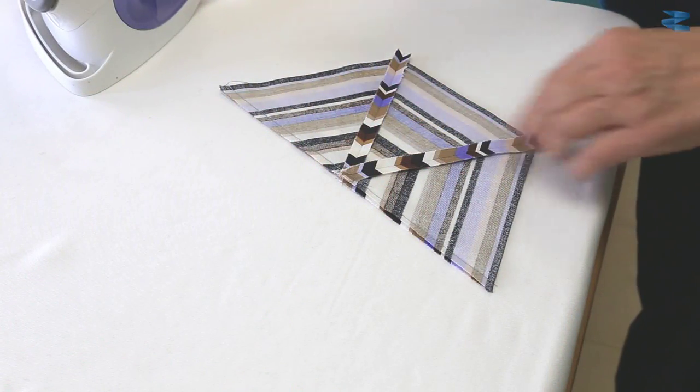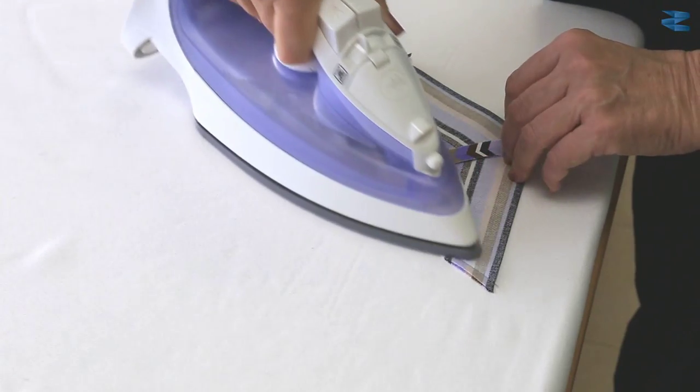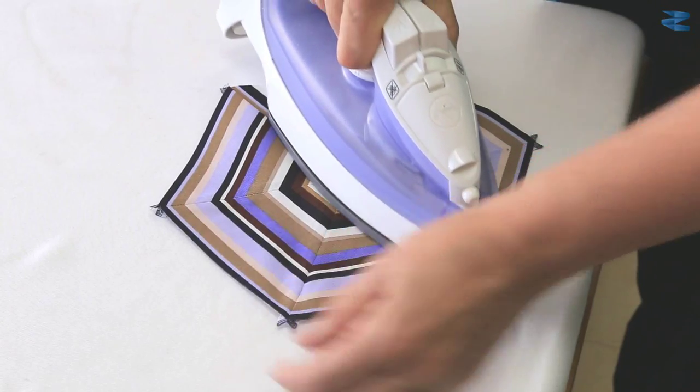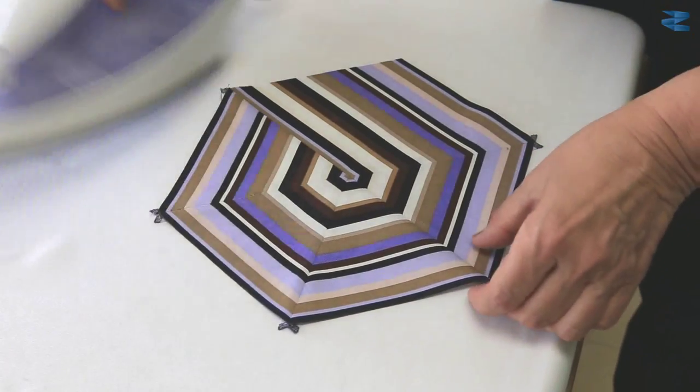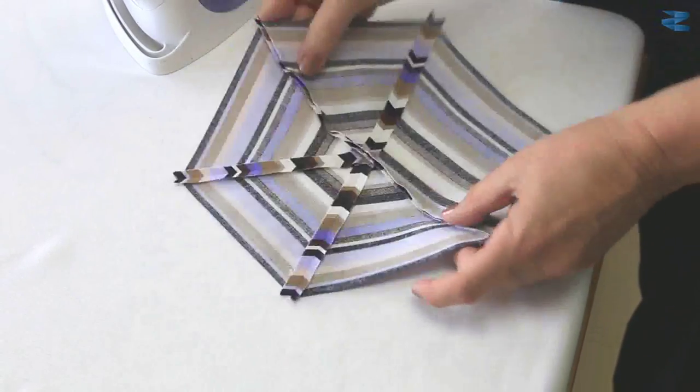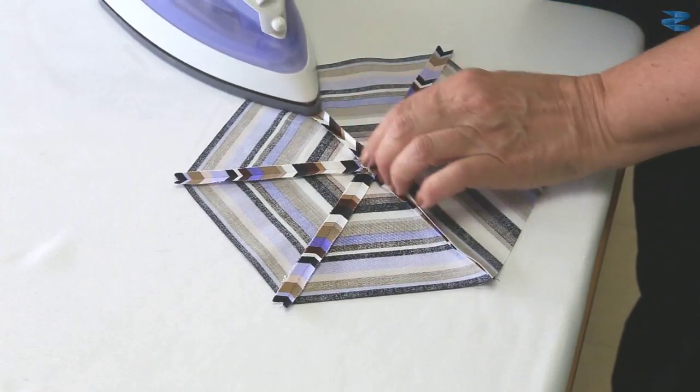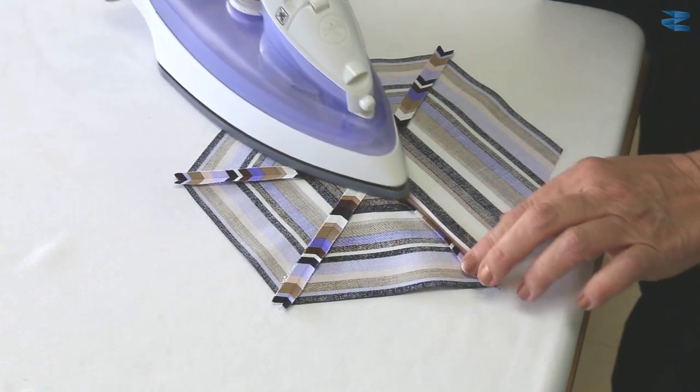We're pressing open the final seam. Now we're going to press the seam of the letter P hexagon. First press it to one way like you would a normal seam. And then flip it over. And it's easier to run your fingers along the seam.